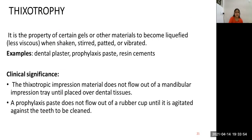Thixotropy is a property of certain gel or other materials to become liquefied when shaken, stirred, spatulated, or vibrated. Examples: dental plaster, prophylaxis paste, or resin cement. Thixotropic impression materials do not flow out of the mandibular impression tray until placed over dental tissues. A prophylaxis paste does not flow out of the rubber cup until it is agitated against the tooth to be cleaned.